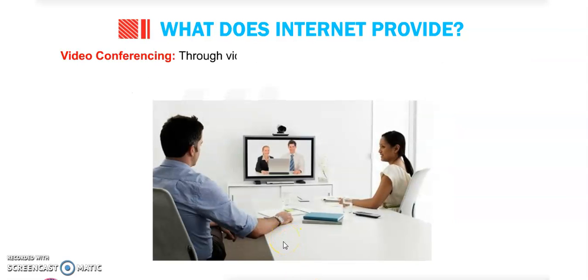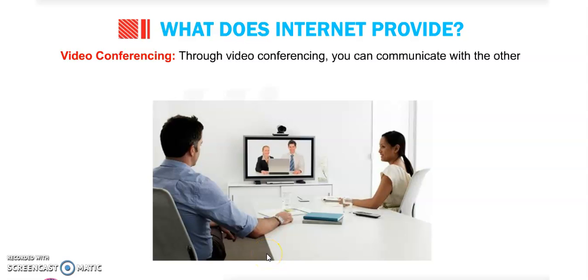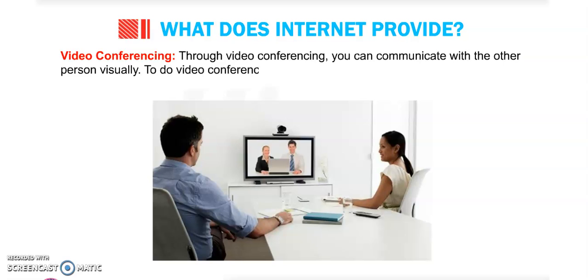Next is video conferencing. In video conferencing, you can communicate with another person visually — we can chat with them as well as see them on our screen with a camera. To do video conferencing, both persons need to have web cameras.